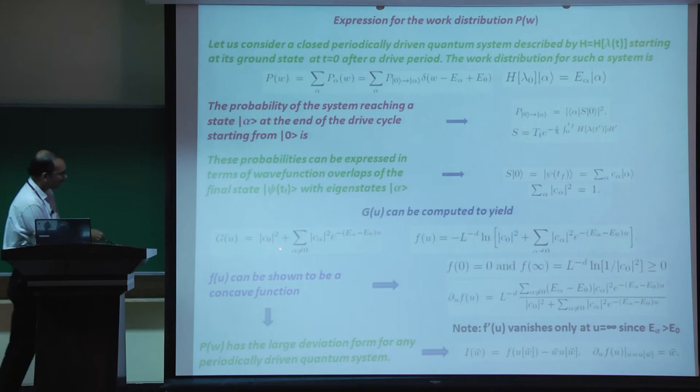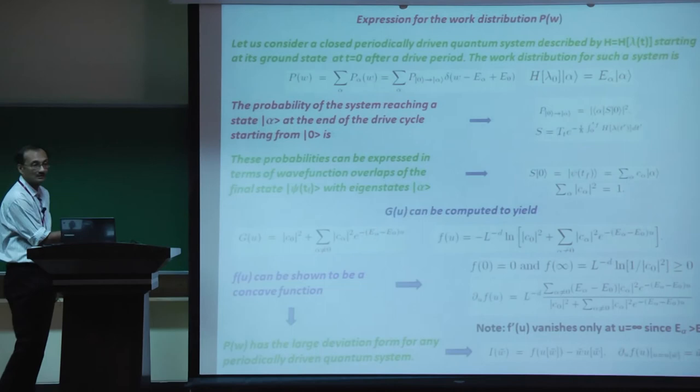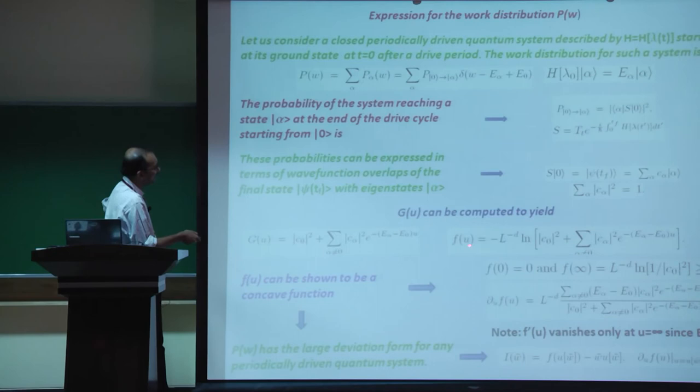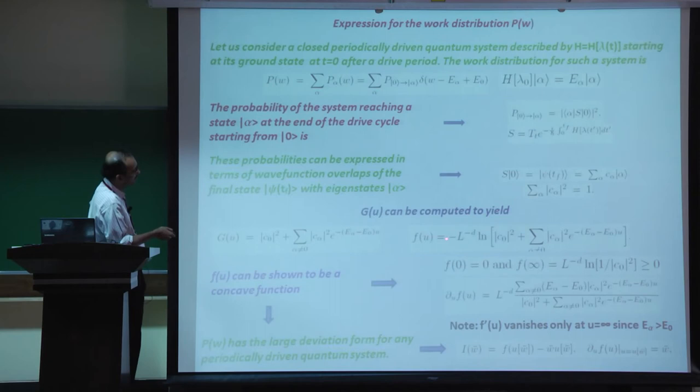Note that the term with |c_0|^2 is independent of u - this happens only because we are looking at the system at the end of a periodic drive. If the initial and final ground states were different, there would be a ground state energy difference times u, which is absent for a periodic drive. From this, F(u) is just log(G(u)) * (-L^{-d}), and one can show F(u) is concave.